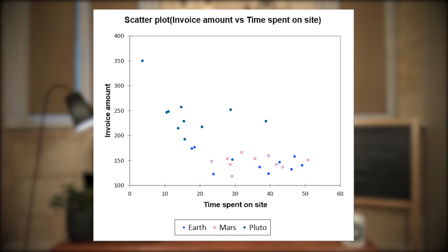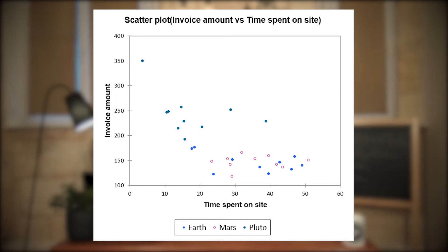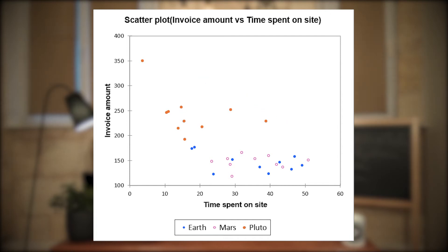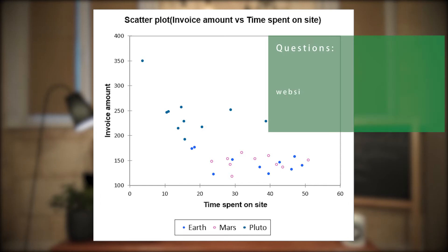Do you remember our video on scatter plots? We explored data relative to a sample of customers from an online shoe store. This chart represents invoice amounts according to origin and time spent on the website. Here are a few statements we had following our explorations: invoice amount decreases according to time spent on the website; Plutonians spend more money than the other customers. These statements can be considered as hypotheses. They can be reshaped into questions whose answer is yes or no. It is obviously possible to compute simple numbers to answer these questions.